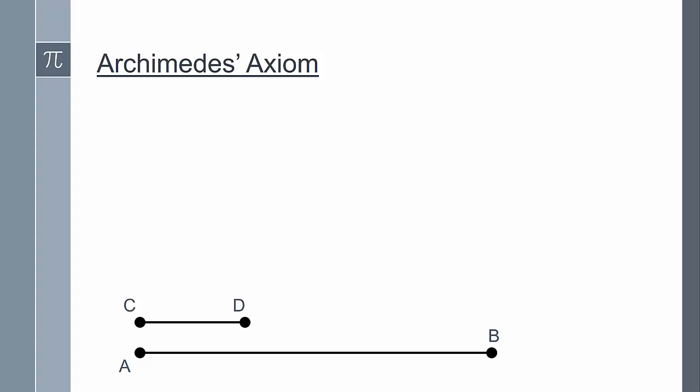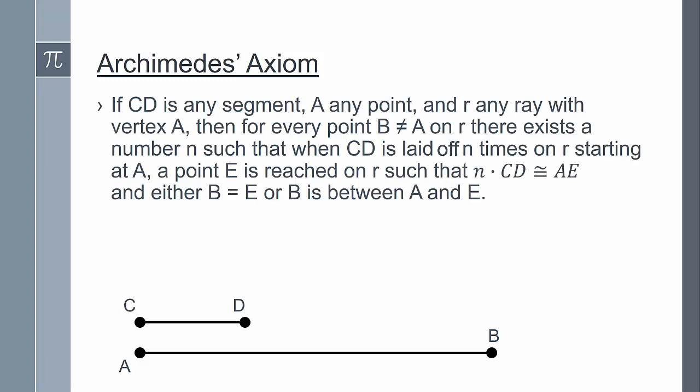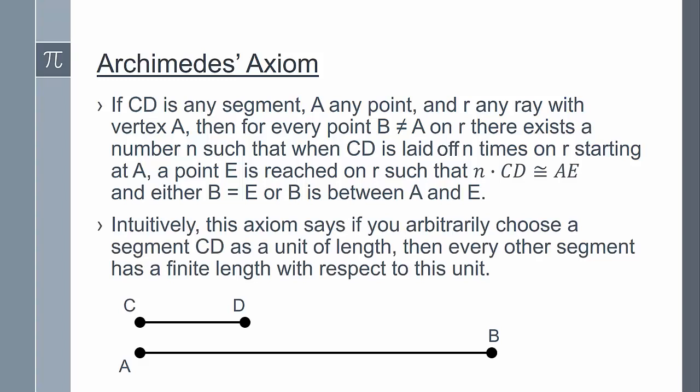So we call this Archimedes axiom. It says that if CD is any segment, A any point, and R any ray with vertex A, then for every point B not equal to A on ray R, there exists a number N such that when CD is laid off n times on ray R starting at A, a point E is reached on ray R such that n times CD is congruent to AE. And either B is equal to E or B is between A and E. So intuitively, this axiom says that if you arbitrarily choose a segment CD as a unit of length, then every other segment has a finite length with respect to this unit. So this isn't exactly just a geometric axiom because it states that some number N exists.